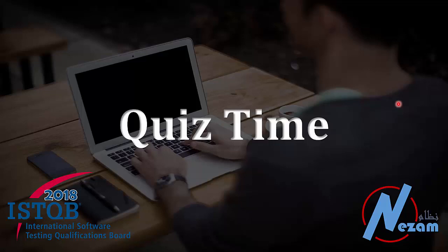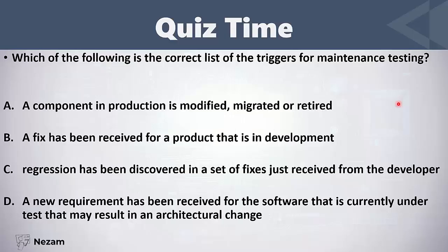Let's now solve some questions on this section. Which of the following is the correct list of triggers for maintenance testing? 'A component in production is modified, migrated, or retired' — this is correct. In order to perform maintenance testing, our system should be in production. If we modify it, migrate it, or retire it, we need maintenance testing.